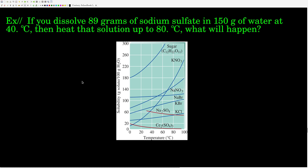Another example: let's say we attempt to dissolve 89 grams of sodium sulfate in 150 grams of water at 40°C, then heat the solution up to 80°C. What will happen? Will anything precipitate out? Will something more dissolve? We're going to use this graph for this problem, so figure this one out and come on back.